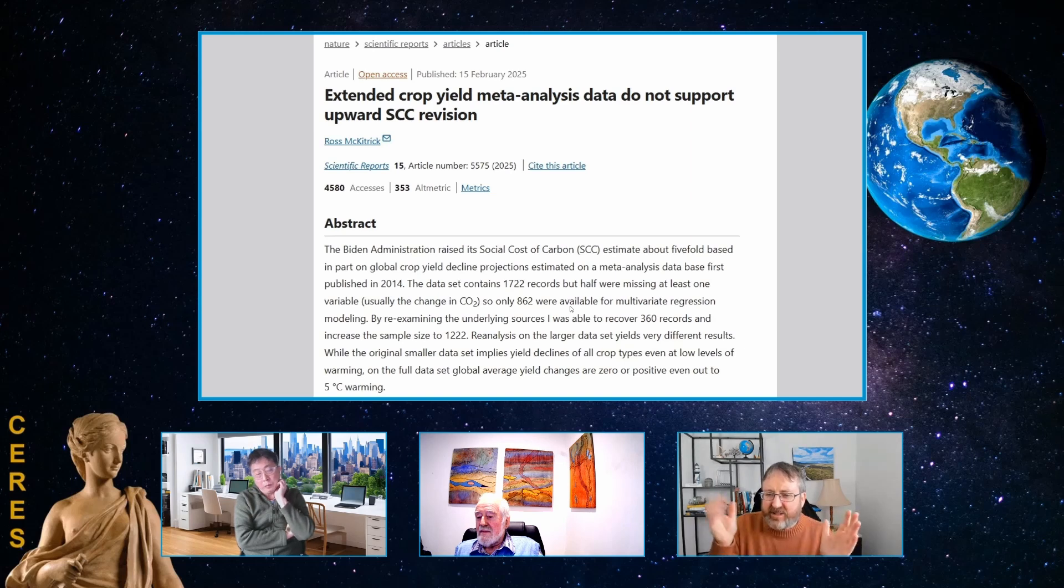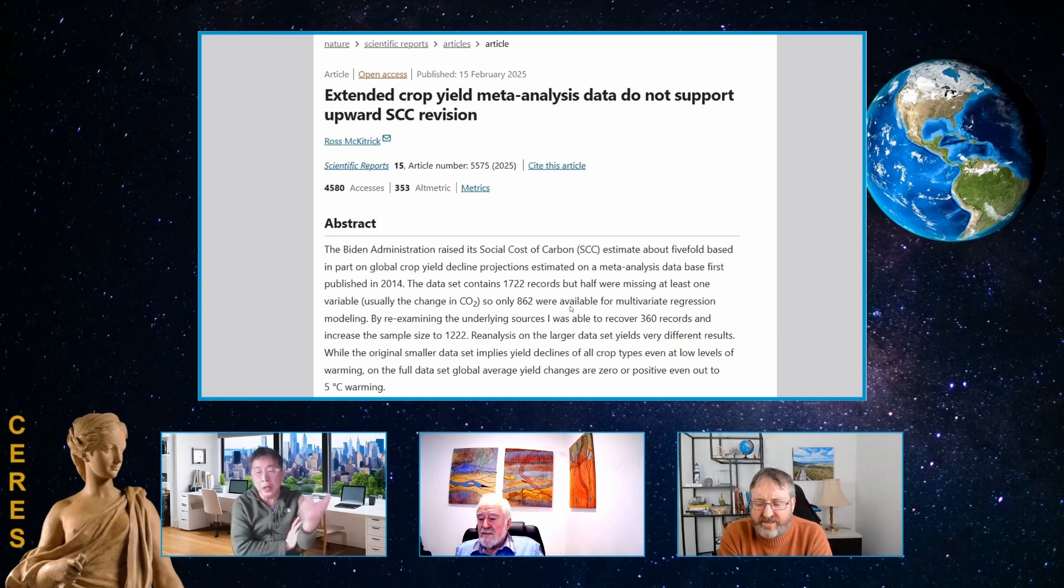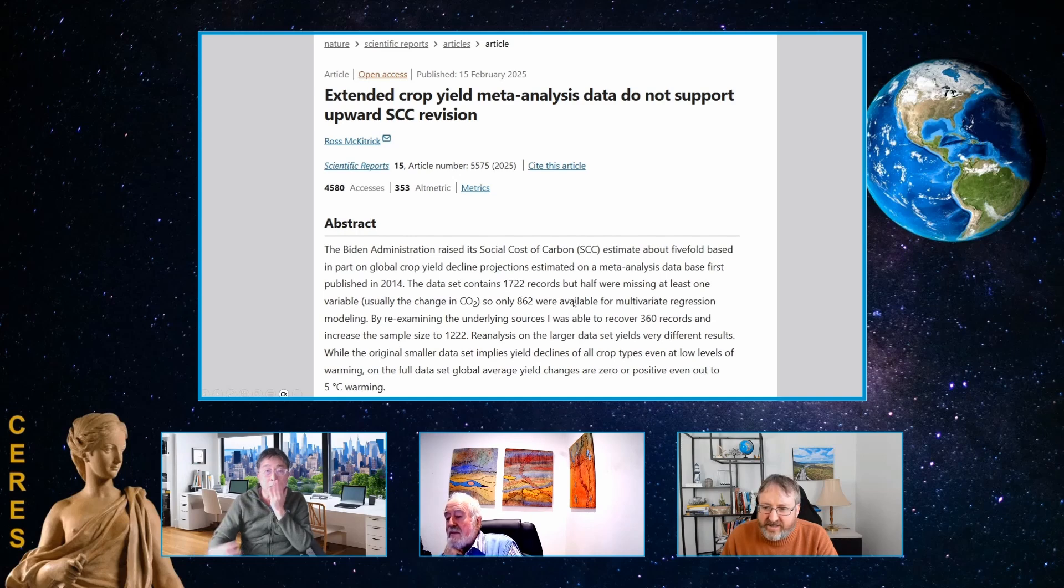And that had contained nearly 2,000 studies itself. It was a big meta-analysis. Yeah, it's about relationship between temperature, atmospheric carbon dioxide and crop yield, like corn, wheat and so on and so forth. And you can see what Ross McKittrick, really a brilliant economist and climate scientist. Ross McKittrick is very good, even in terms of data analysis and climate science, actually very knowledgeable. So he went and looked at this suspicious study.